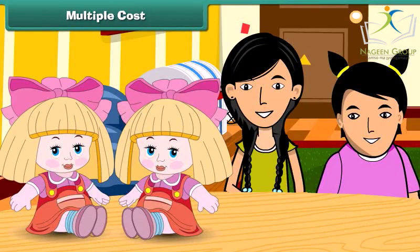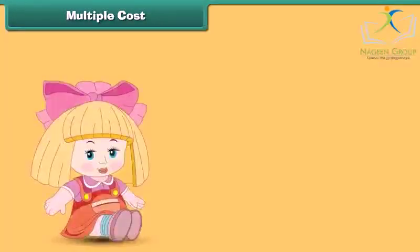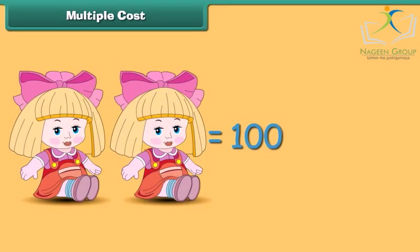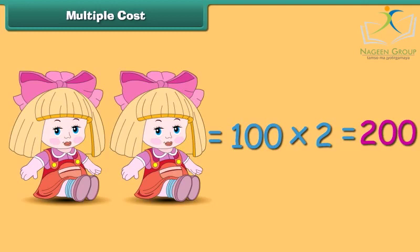Let us hear what these girls are talking. My mother bought these two dolls — one for me and one for my younger sister. The unit cost of a doll is 100 rupees. Unit cost is the cost of a single unit, so the cost of one doll is rupees 100. The multiple cost of two dolls is equal to rupees 100 multiplied by 2, which is rupees 200. A multiple cost is the cost of more than one item and is calculated as unit cost multiplied by number of items.